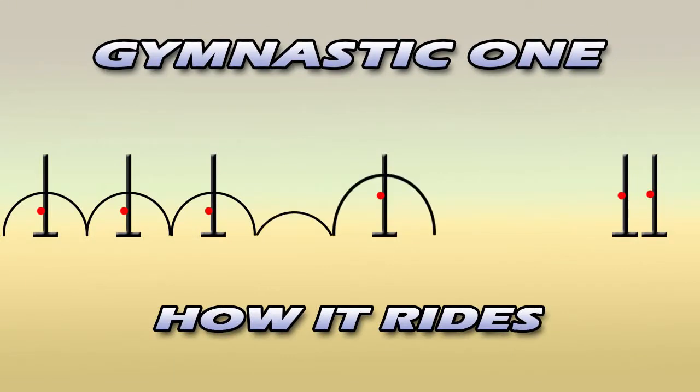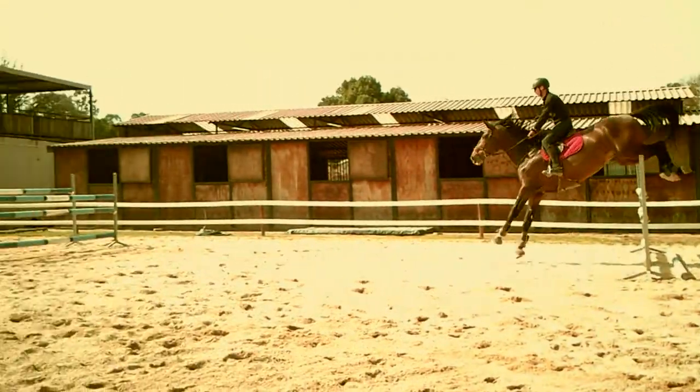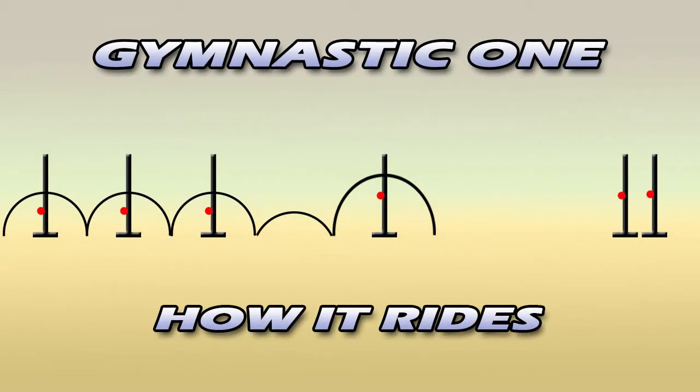Then it's one short stride to a vertical. This part works on your horse's technique in front, as well as gets him to sit on his hocks and bascule over the jump.